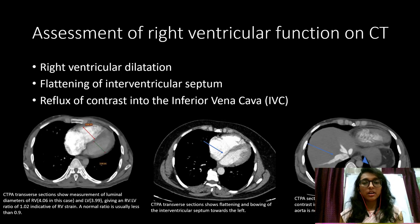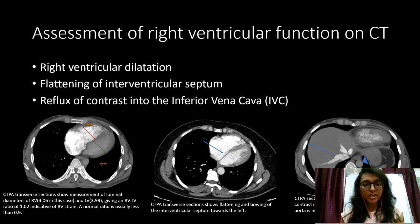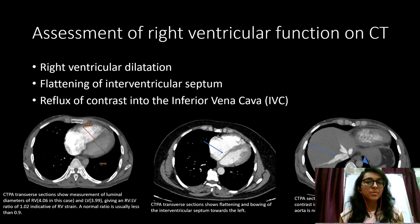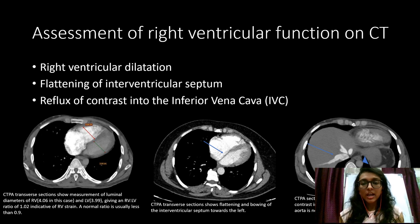Apart from diagnosis, CTPA can also assess right ventricular function. Signs of right ventricular strain include: right ventricular dilatation, where the ratio of the right ventricular diameter to the left ventricular diameter exceeds 1 — normally this ratio is less than 0.9; flattening or bulging of the interventricular septum towards the left side; and reflux of contrast into the inferior vena cava and hepatic veins.